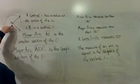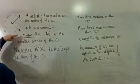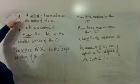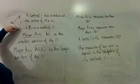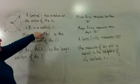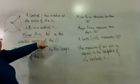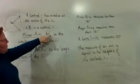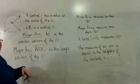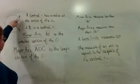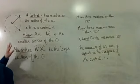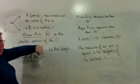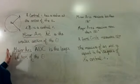A minor arc is the smaller section of the circle. This is minor arc AC because it connects A to C. The symbol for an arc is a small arc over the letters, going from A to C or from C to A — the order doesn't matter. Minor arcs always have two letters: where it starts and where it ends.